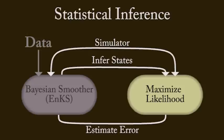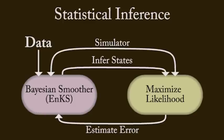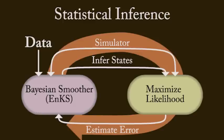We then compute a distribution of the error between the simulation states and the states inferred from the data. Finally, we use this new estimate of the error to better infer the simulation states from the data. This process is iterated until convergence.